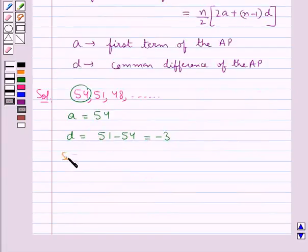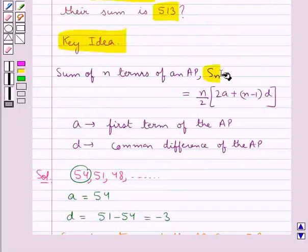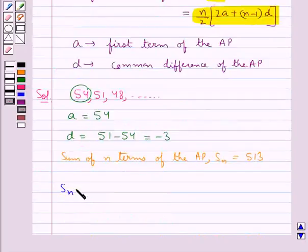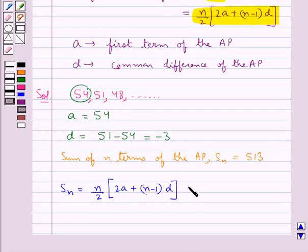It's given that the sum of n terms of the AP, that is S_n, equals 513. Now we know that S_n is given by n/2 times [2a + (n-1)d], so S_n equals 513.